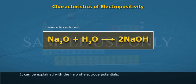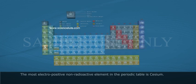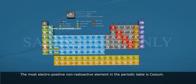It can be explained with the help of electrode potentials. The most electropositive, non-radioactive element in the periodic table is cesium.